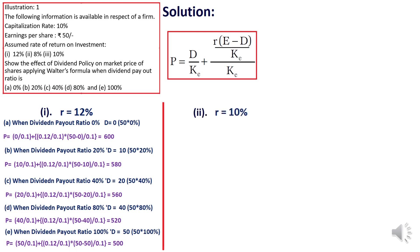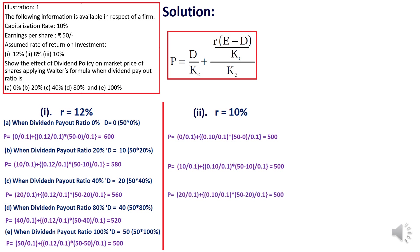The second situation is R equals 10%. Since K is also 10% and R is also 10%, the first dividend payout ratio of 0% gives a value of 500 rupees. When we pay 20% dividend, the value is 500. At 40%, the value is 500. Applying the same formula with only the dividend changed, at 80% payout, the value is still 500, and at 100% payout, the value is still 500. In all five situations A to E, the value of the share is 500 rupees.